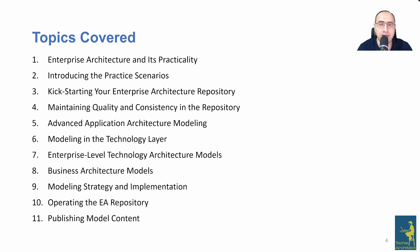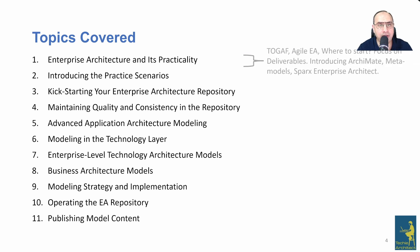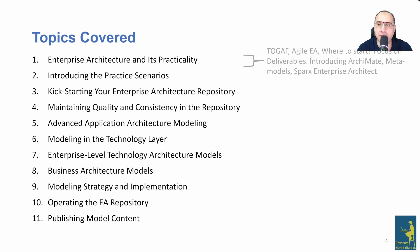I'll go quickly through the topics covered in this book. The first chapter was the longest, covering agile enterprise architecture and where to start an EA practice in any organization. It has a lot of focus on deliverables and artifacts, and it introduces ArchiMate, its meta models, and the tool used throughout the whole book — Sparx Enterprise Architect.